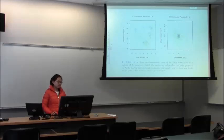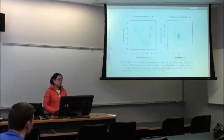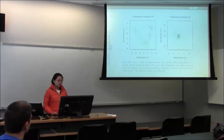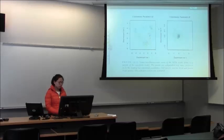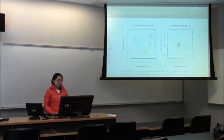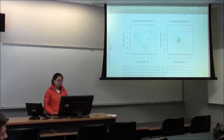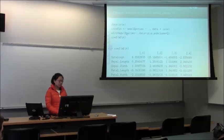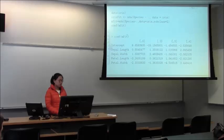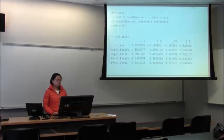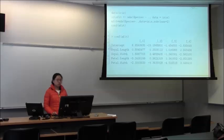Discriminant variable 1 is eta-1-hat, variable 2 is eta-2-hat, and so on. For discriminant variables 3 and 4, the classification effect is not as good as for the first and second. The R package example uses subclass equals 2, applied to the same dataset. With two subclasses, each class has two more sets of coefficient estimates, giving four sets total.